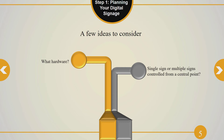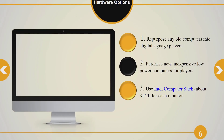Step one is to plan your digital signage. Consider what hardware you'll use and whether you want a single sign or multiple signs controlled from a central point. With PowerPoint, you can repurpose any old computers as digital signage players — a great way to recycle them, since you don't need a high-end machine just to run PowerPoint. You can also purchase new inexpensive low-power computers, or use the Intel Computer Stick — about $140 — a palm-sized computer that plugs into any USB port on a TV or monitor.